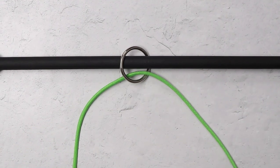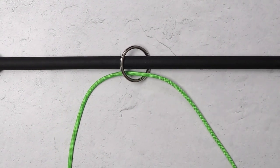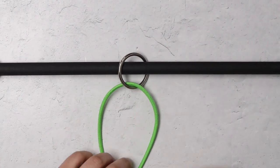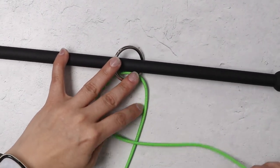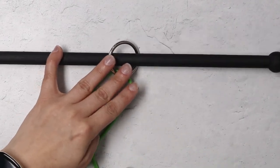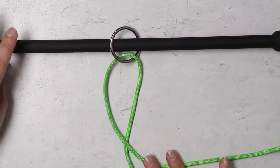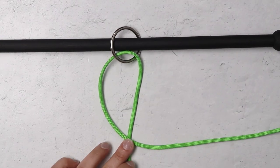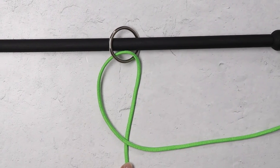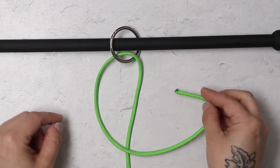So to make this hitch, you'll want to start by passing your working end through your ring or hitching point. Then you'll take your working end and pass that across the front of your stationary strand. And then you'll pass it back behind both strands.